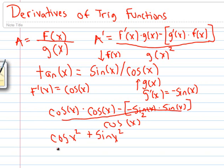Distribute that in there. So here we have plus sine of x squared, all over cosine of x squared. The Pythagorean identity tells us that cosine of x squared plus sine of x squared is equal to 1.